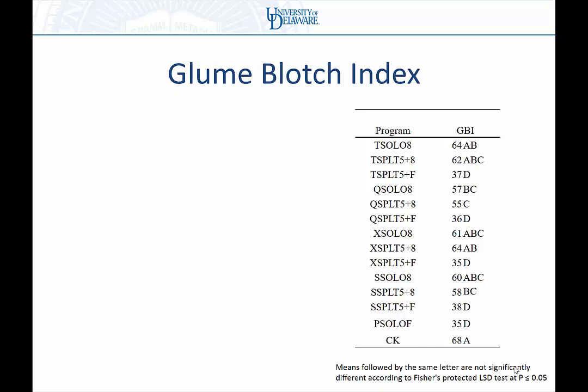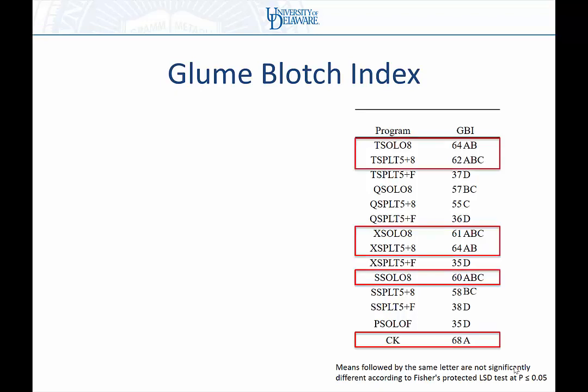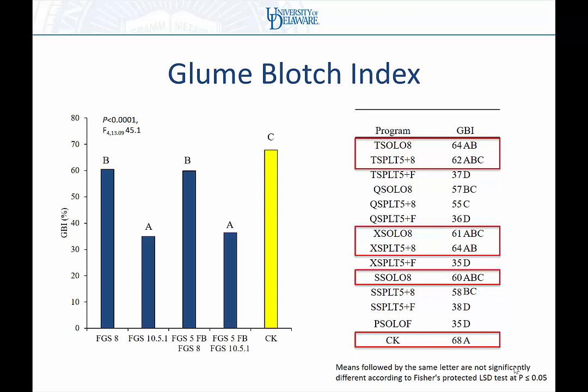For glume blotch on the head, the fungicide program had a significant effect, but not all programs were significantly different from the untreated check — particularly the flag leaf and early plus flag leaf programs. When looking at collapsed timings, the flowering application resulted in the lowest glume blotch on the head, which makes sense because it was the only application that actually sprayed the head. The other timings were applied before the head emerged.